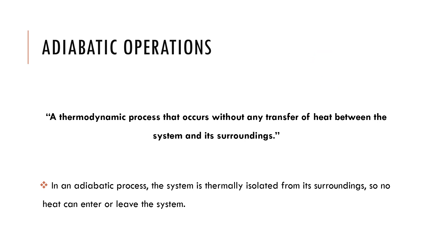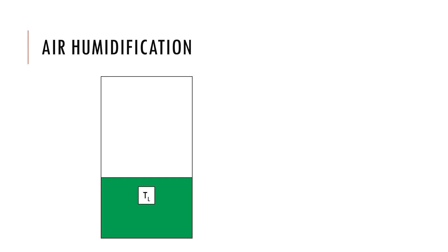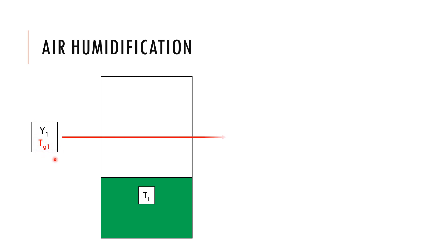Now that we know what an adiabatic operation is, let's discuss how air humidification happens in a typical air humidifier or spray chamber. Imagine this is your air space and you have a liquid tank stationary at temperature T_f. A gas flow is blown through a fan or blower entering with absolute humidity Y1 and temperature T_g1. When air flows through this media and we spray water from the top, a latent heat transfer happens from water to air, cooling the water.